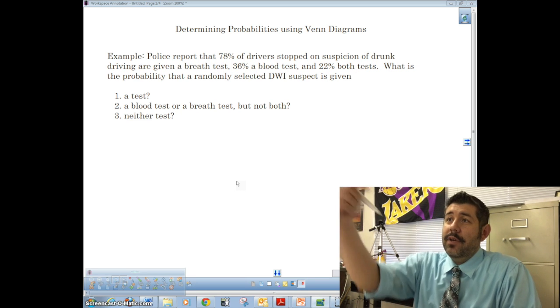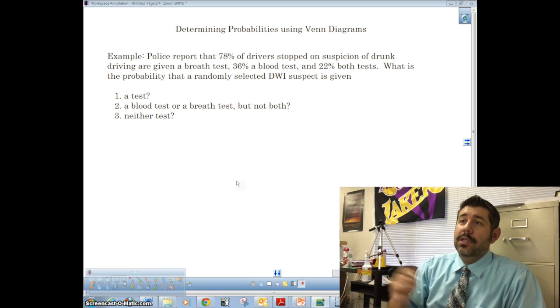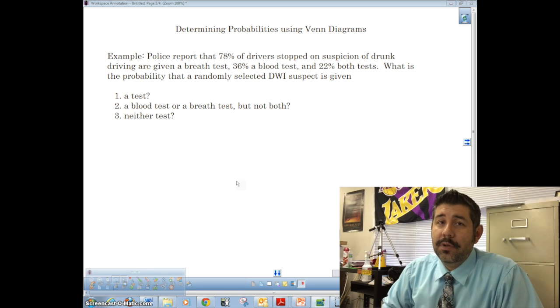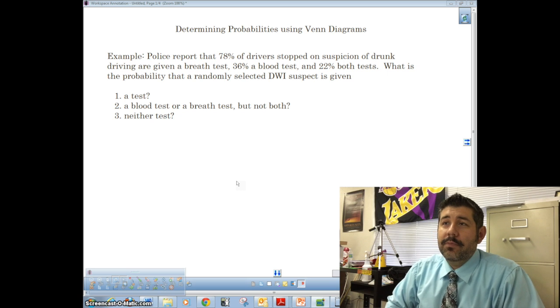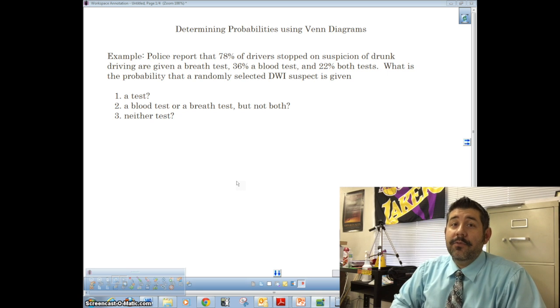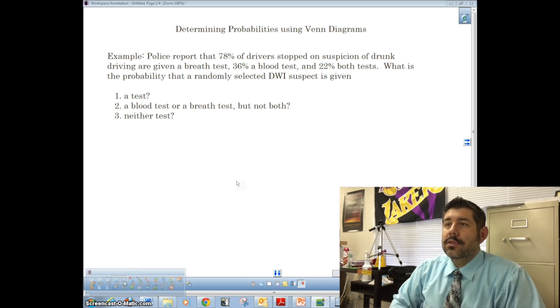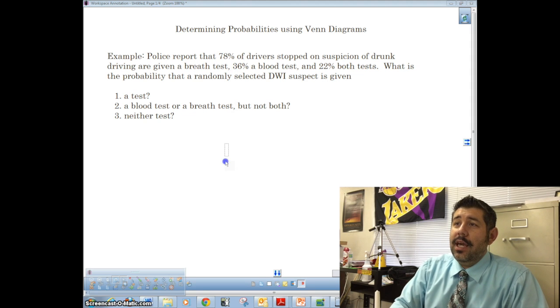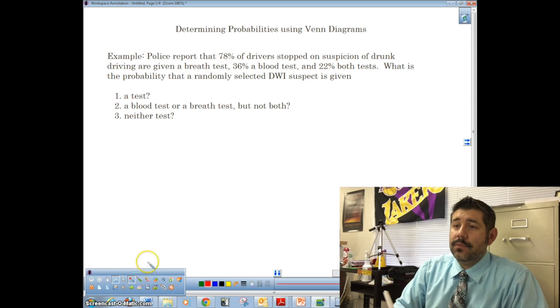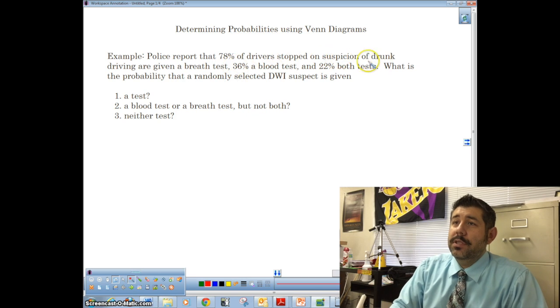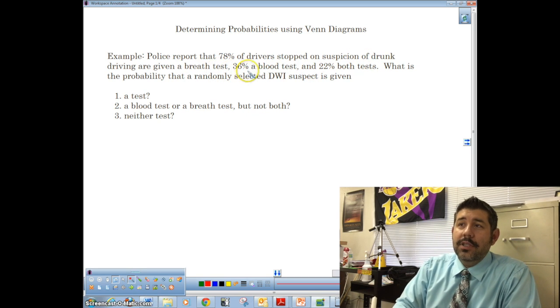So I have determined probabilities, and this is a police report. Now in case you want to know, this is an example from our textbook, Bach, Vellemann, Nouveau, in chapter 15. So the police report is that 78% of drivers stopped on suspicion of drunk driving are given a breath test, 36% a blood test, and 22% both tests.